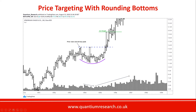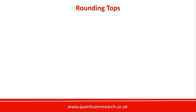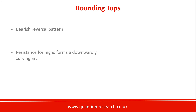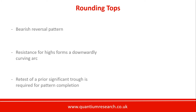With rounding tops, we must remember these are the bearish equivalent of rounding bottoms. Resistance for peaks forms a downwardly curving arc. Again, there may be some subjectivity as to when exactly the pattern ends, but you should choose a clear and obvious trough. With rounding bottoms we mentioned a clear and obvious peak; here you need a retest of a clear and obvious trough — that significant trough from the beginning of the pattern — and that level must be broken for this pattern to confirm.